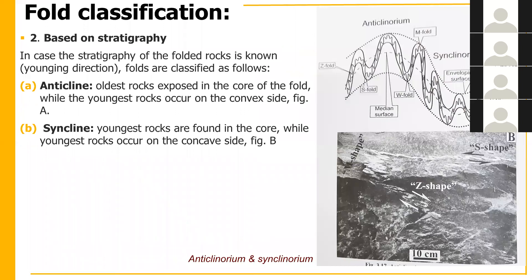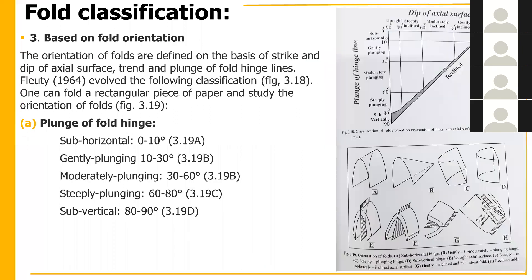Related terms are anticlinorium and synclinorium, where multiple folds exist within a larger fold — many anticlines and synclines within one larger structure. The enveloping surface shown by dotted lines is itself a fold containing many smaller folds at micro-scale. We can see Z-type, S-type, W-type, and M-type folds — these are just named for their shapes. M looks like M, W looks like W, S and Z similarly. A real rock photo is also shown. S-type and Z-type folds indicate sense of movement.